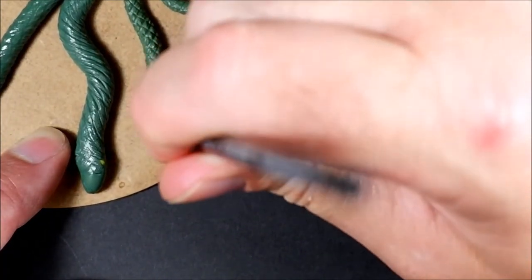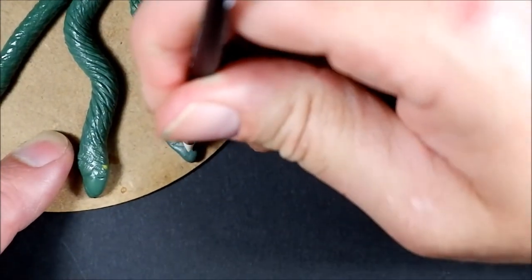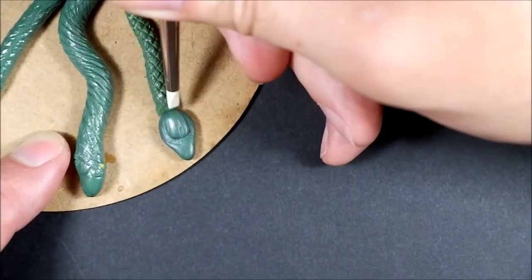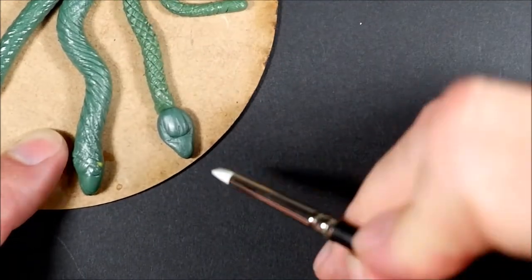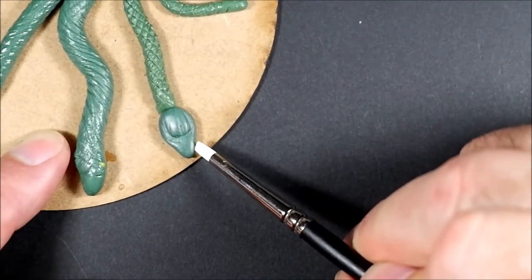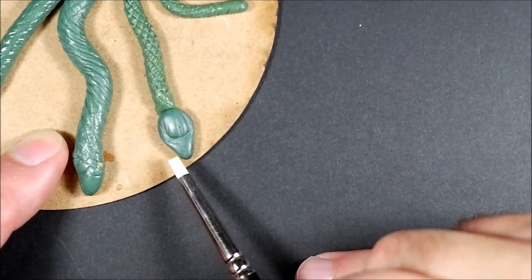I'm going to go dead center of that ridge, just create an indent, and then smooth it off towards the back. There we go. A couple of nostrils at the front. I'm just using the triangle end of the shaper.